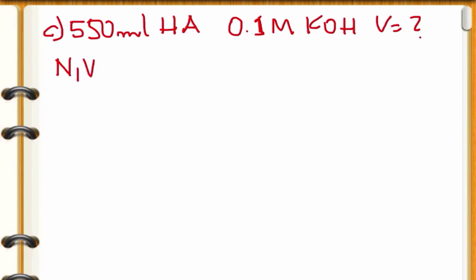Turn the page and do C now. We want to neutralize 550 milliliters of HA with 0.1 molar KOH, and the question is what volume of this KOH would be required. There are various ways of solving this problem. You have to keep in mind that this is a neutralization, but both are monoprotic. Normally we would use the formula N1V1 equals N2V2 normality, but also we can use M1V1 equals M2V2 because we have one OH and one proton for the acid.